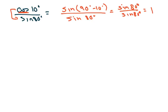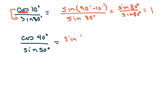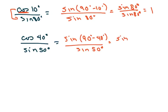We have another one like that: cosine of 40 degrees over sine of 50 degrees. If I change the numerator — you could change the denominator if you wanted — we get sine of 90 minus 40 degrees over sine of 50 degrees. So you get sine of 50 degrees divided by sine of 50 degrees, and this equals 1.